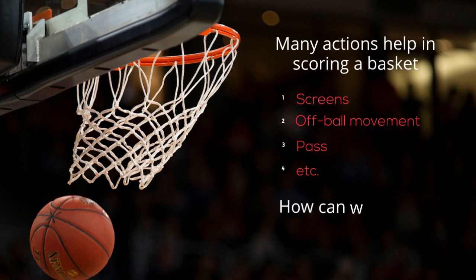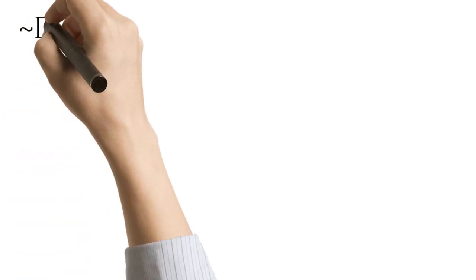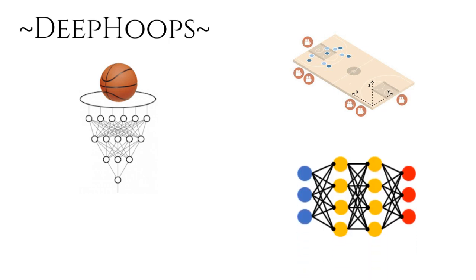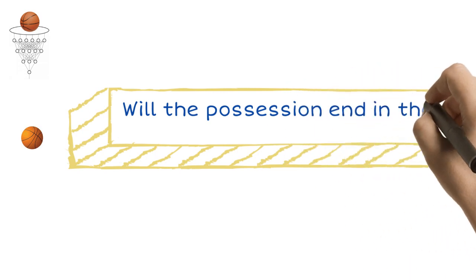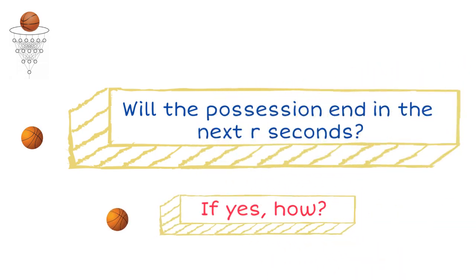In this work, we are interested in identifying ways to assign credit to each one of them. For this, we introduce Deep Hoops, which processes spatiotemporal data from NBA games to train a recurrent neural network model. Our model tries to answer whether the current possession will end within the next T seconds and, if yes, with what action.